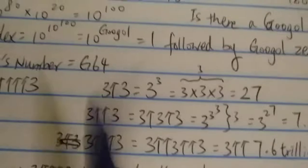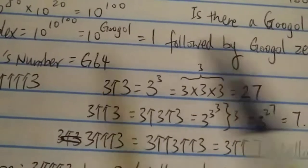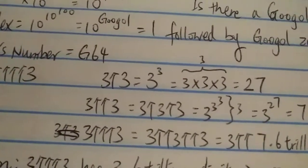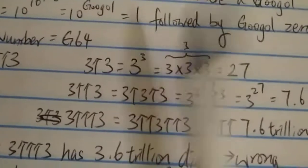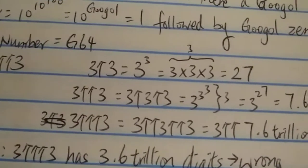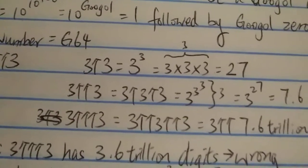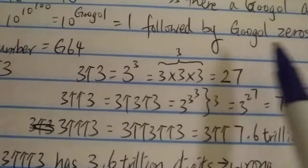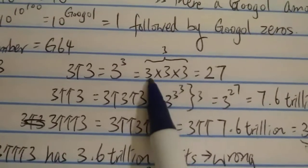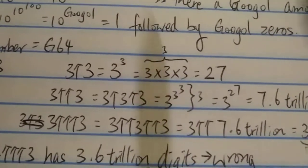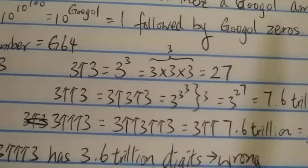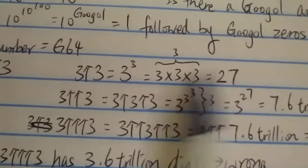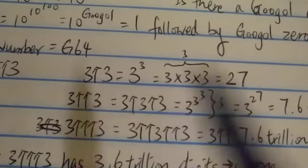Let's look at one arrow first: 3 ↑ 3. That just means 3 to the 3, which is exponentiation — 3 times 3 times 3, with three 3s — which equals 27.